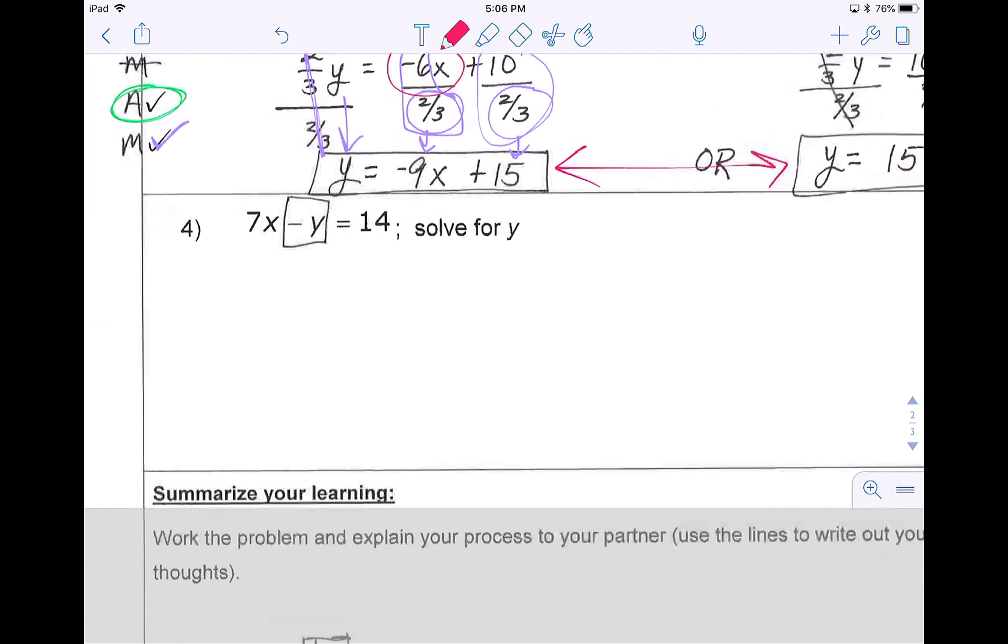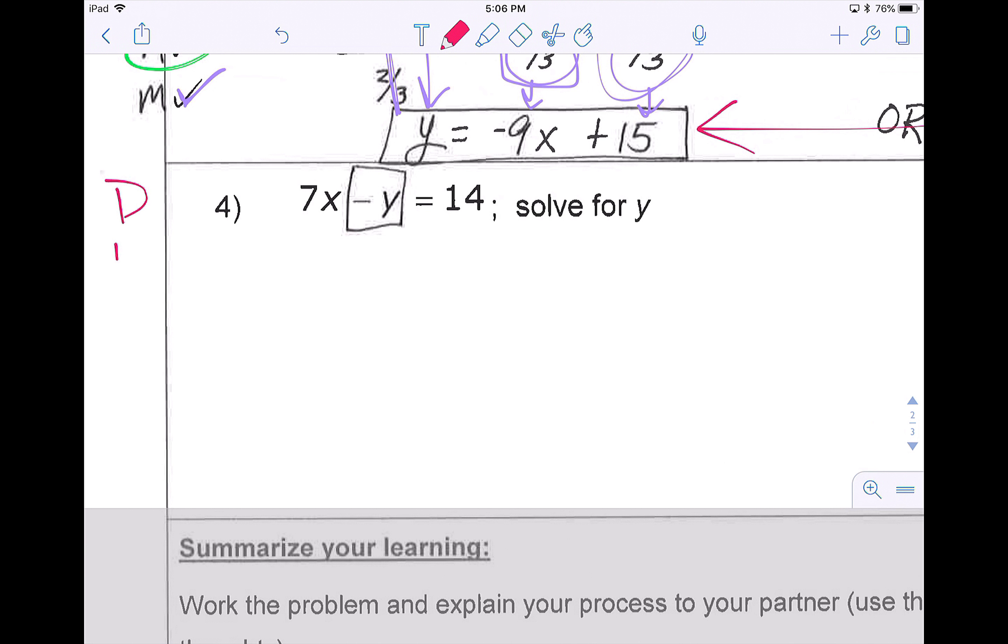Problem 4, we're asked to solve for y again. So we still use don't call me after midnight. There are no parentheses, so nothing to distribute. No x's, y's, or numbers repeated, so nothing to combine. Only one box of y's, so nothing to move. We do need to add or subtract because there's something outside of the box. So 7x becomes a negative 7x to move to the other side.